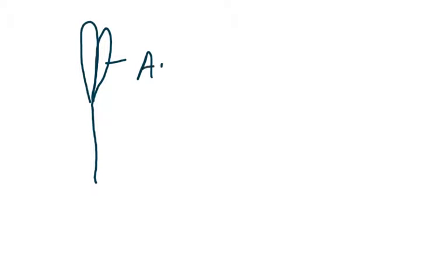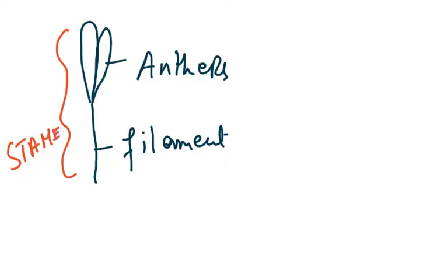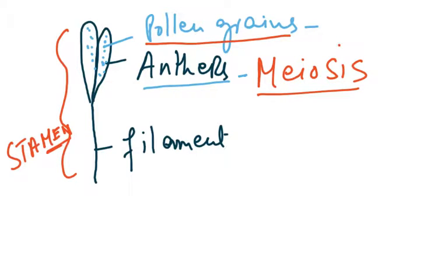In plants, of course, it takes place in the anthers. Anthers are the male part, and then there's the filament which is the stem through which the xylem and the phloem pass and which provides nutrients to the anthers. This as a whole is called the stamen, and this is the male part. So the pollen grains which develop inside this would be formed by meiosis, because the pollen grains are the male gametes.